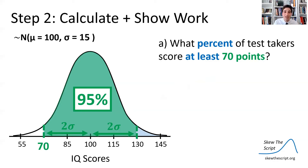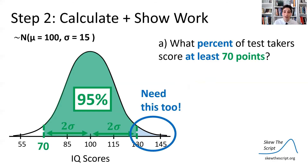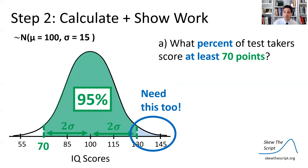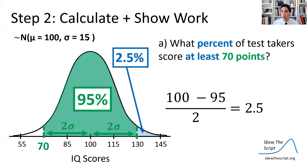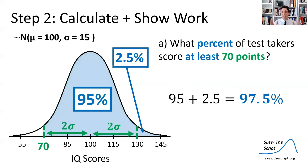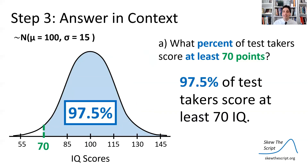We have 95% of the data, but I need that upper tail as well because I need everything above 70, including beyond two standard deviations above the mean. If 95% is within two standard deviations of the mean, that means 5% is in the tails. Since the normal curve is symmetric, one tail is just 5 divided by 2, which is 2.5%. So taking the 95% I had before and adding the 2.5% in the upper tail, we get 97.5%. This means that 97.5% of test takers score at least a 70 on an IQ test.